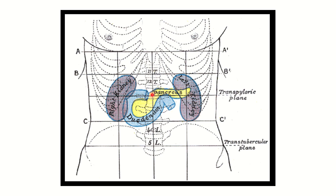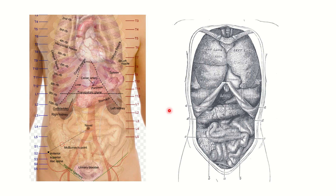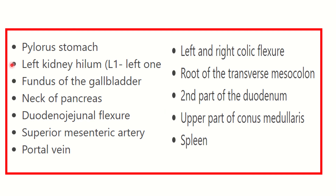Here we can see the duodenum, the body of the pancreas, and the hilum of both kidneys — these structures are located at the transpyloric plane. This picture shows the structures located at the level of the transpyloric plane, which is the lumbar 1 vertebral level.